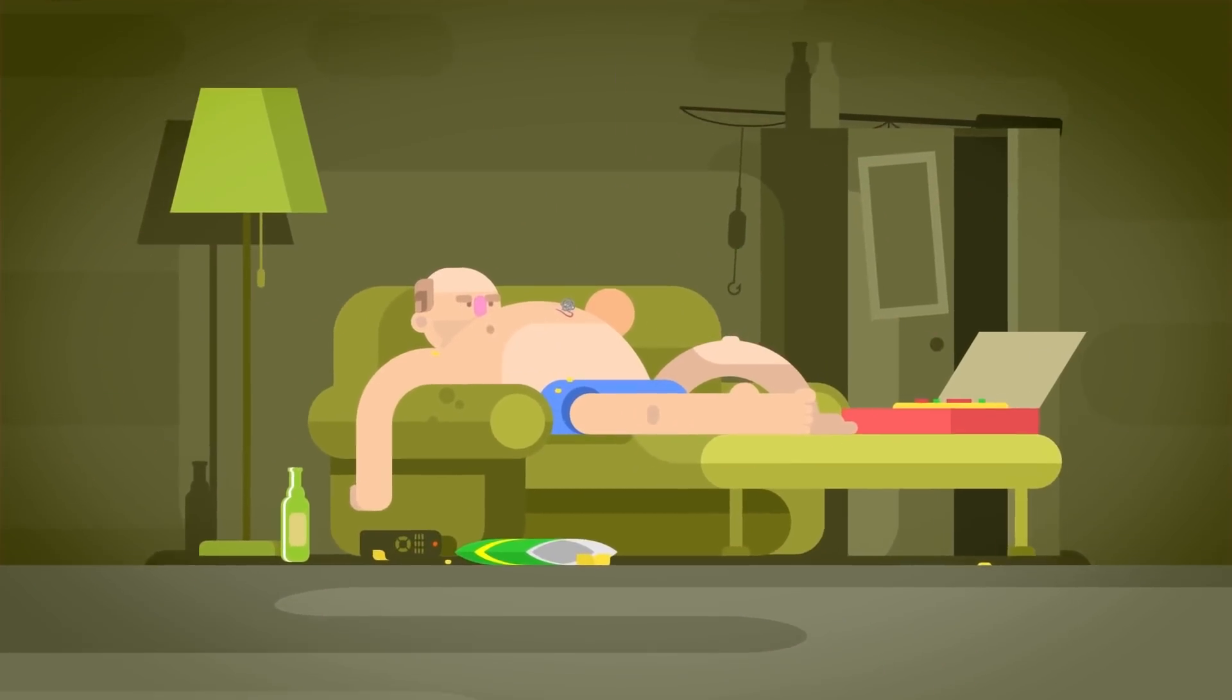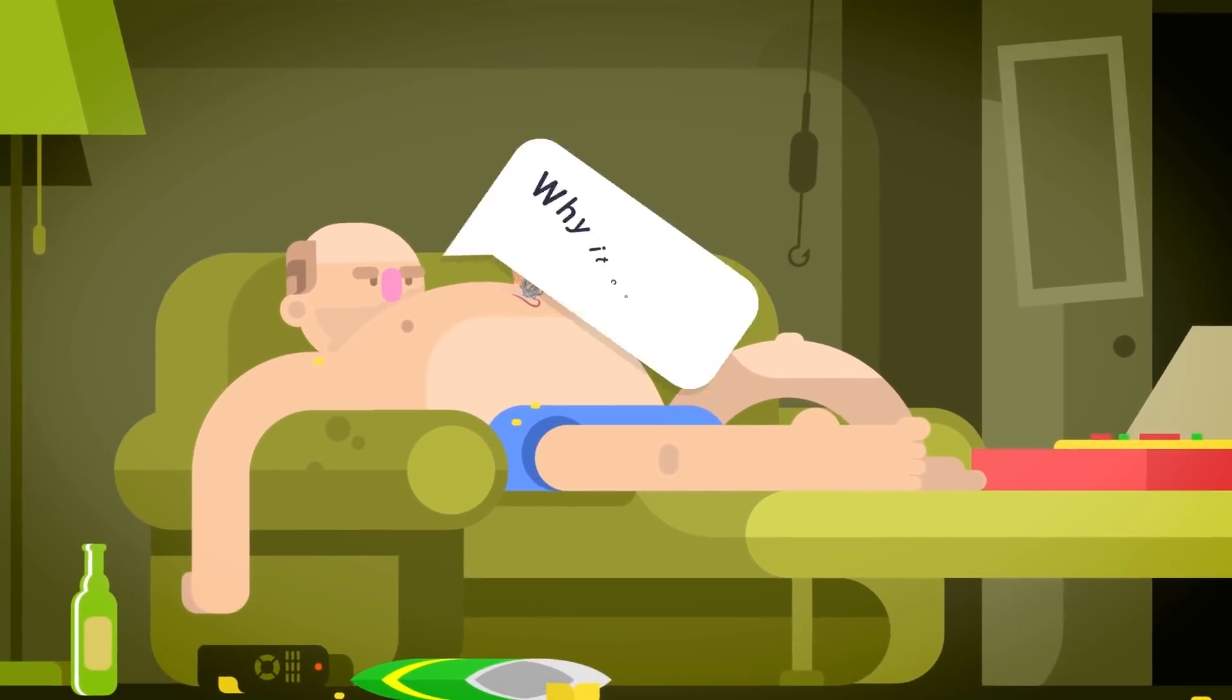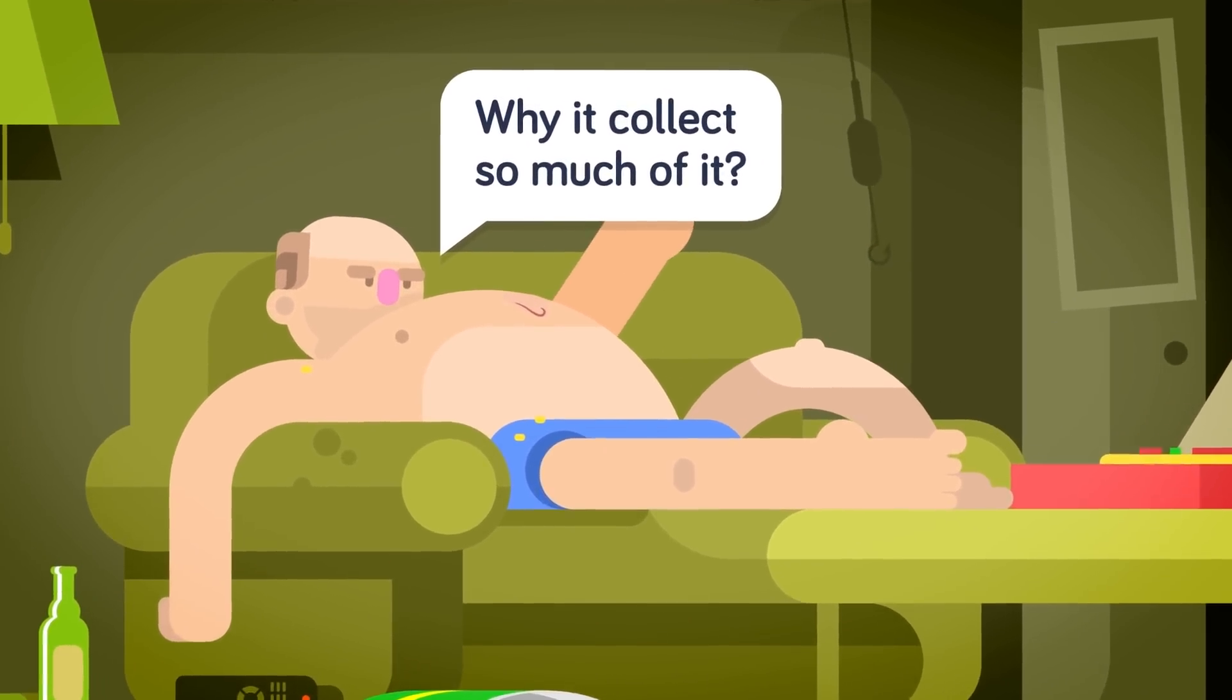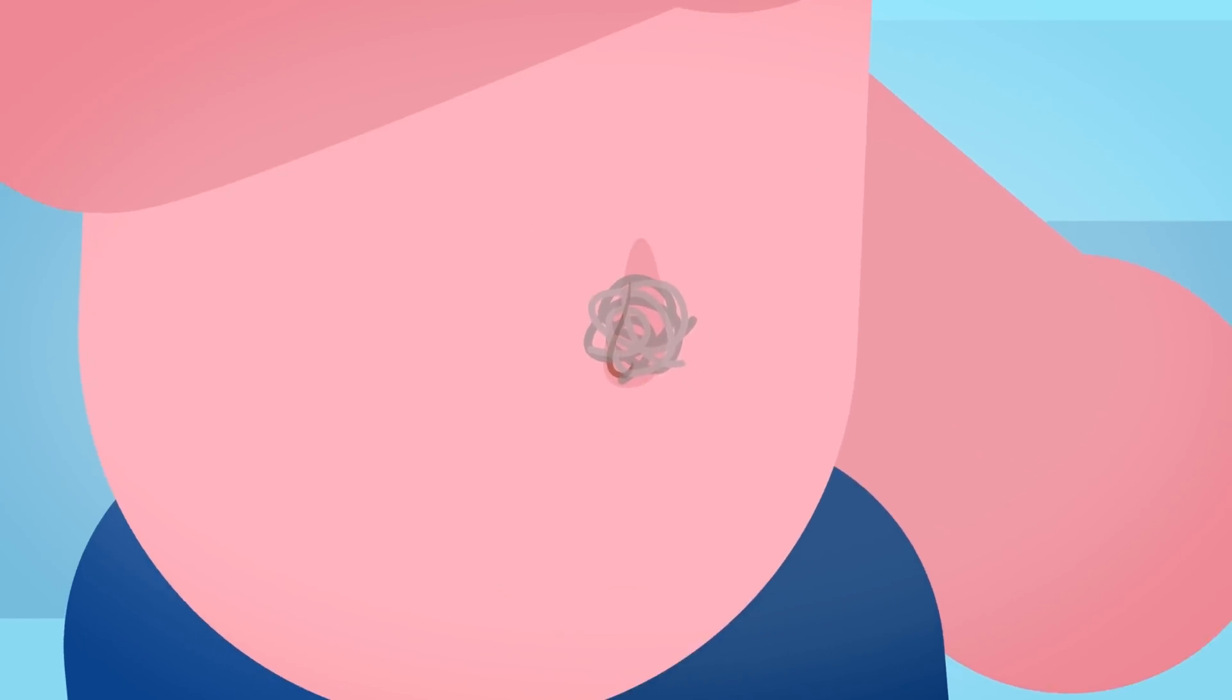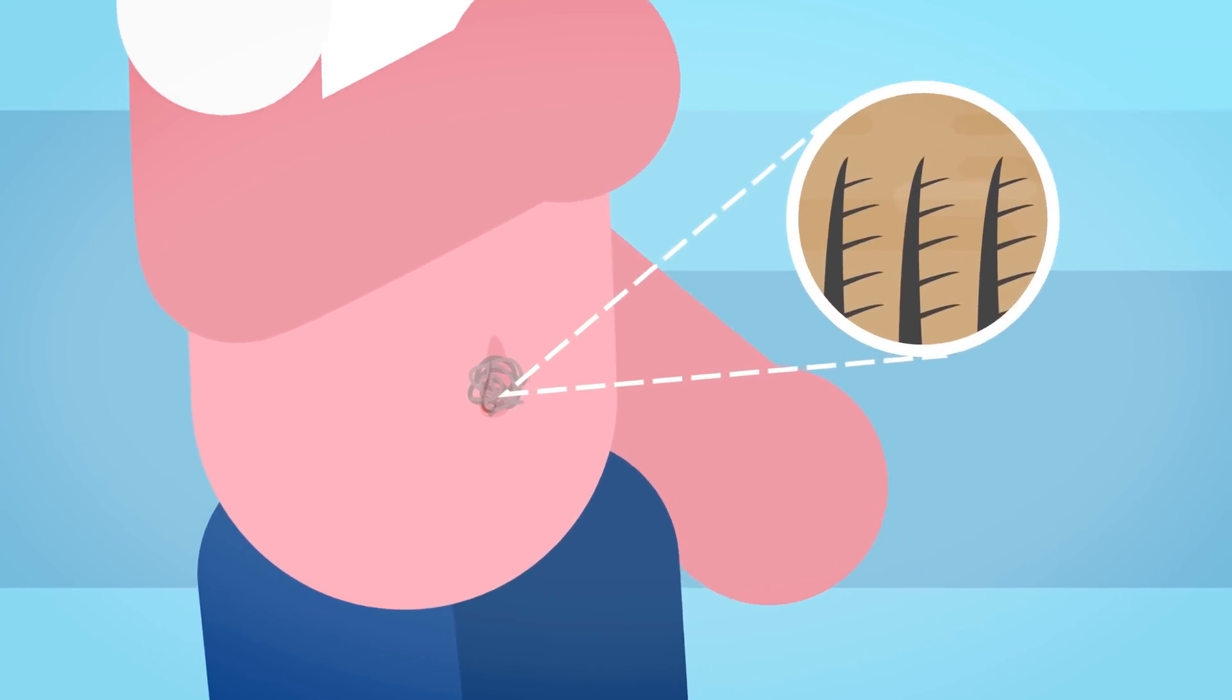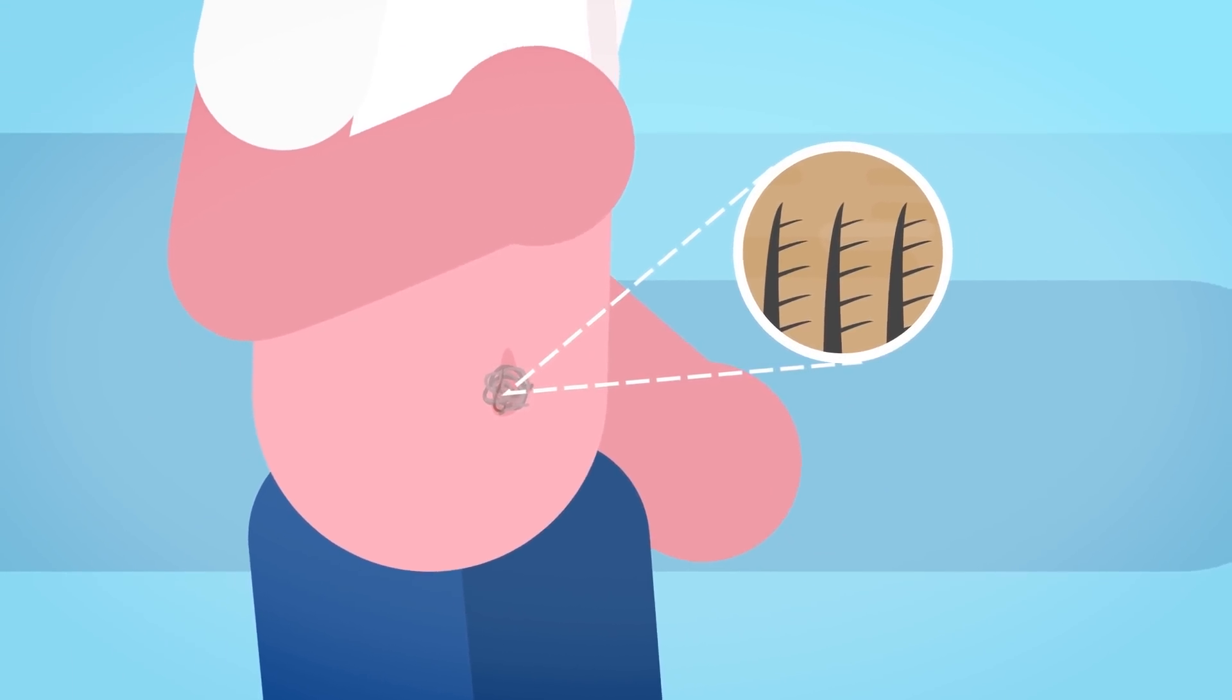And speaking of lint, have you ever wondered why your belly button seems to collect so much of it? It's actually because of a special type of hair that grows in our belly buttons. And we can thank these fluffy hairs, which have tiny barbs on them, for getting stuck to our clothing and leaving us with a dryer's worth of belly button lint.